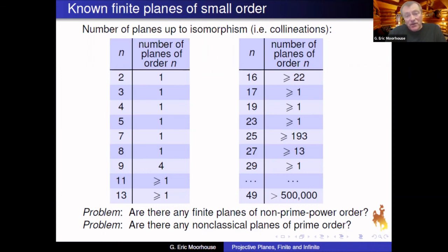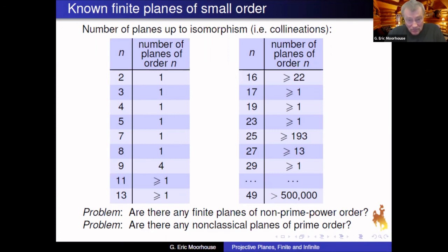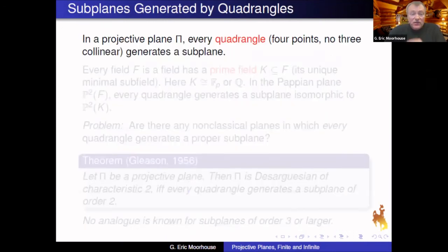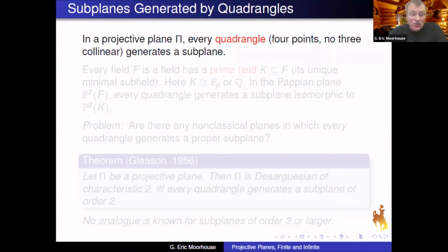My preference today is to talk about problems where there is a meaningful interpretation in both the finite and infinite case, and sometimes the answer is rather different. I'll start by talking about structural properties for the first half, and then switch to talking about questions involving the automorphism group.